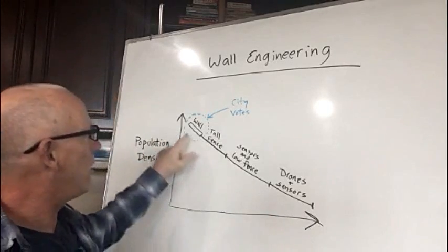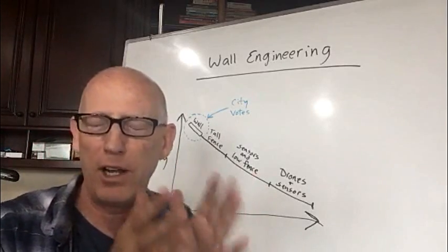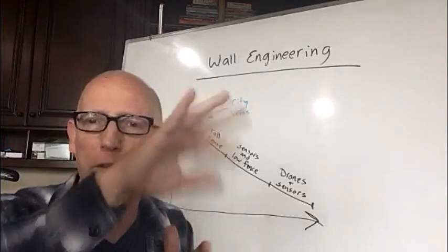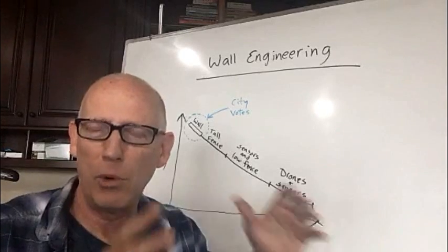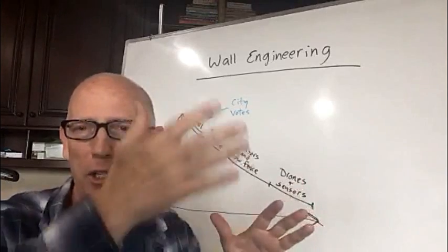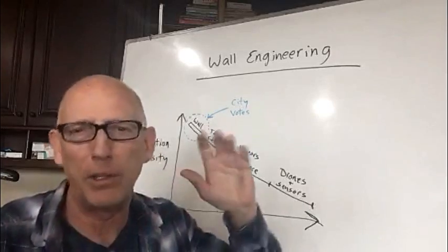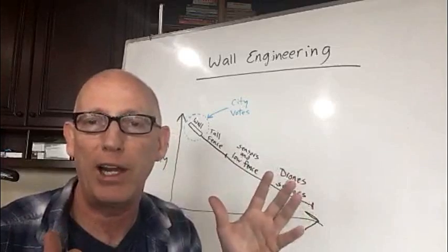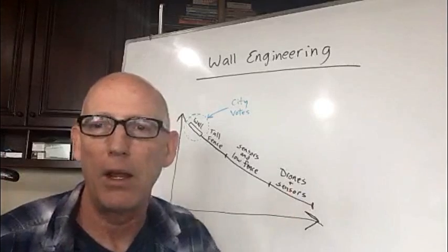The places you need a solid wall are where you have lots of population on each side. Because if somebody hops over the wall, they immediately can disappear into the city. So the more population density, the more you need something that will slow down the people trying to get over. Because if it takes a while to put a ladder up and get over, at least there's some time for people to notice and send someone.